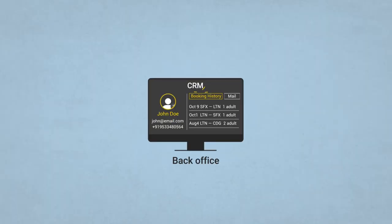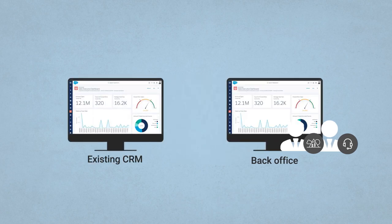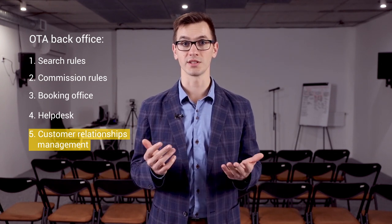Traveler name, their booking history, personal details, communications – all stored in a CRM and used by travel agents and customer support. OTAs may have a bespoke CRM tailored to their needs. Or they can integrate existing ones like HubSpot or Salesforce to their back office. A CRM helps send promotional emails, use personalization, and maintain coherent relationships.